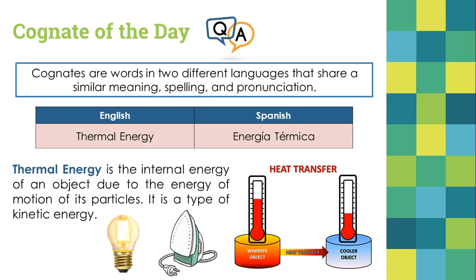Alright, so we're going to continue talking about heat and all that is related. So our cognate of the day would be thermal energy, and in Spanish would be energía térmica. So what is that in specific? It's the internal energy. This means that it's inside the body. So it's the internal energy of an object due to the energy of motion, kinetic energy, energy of motion, of its particles.